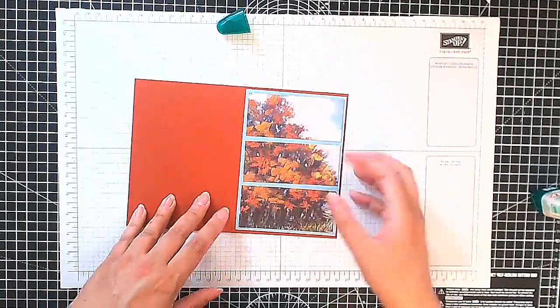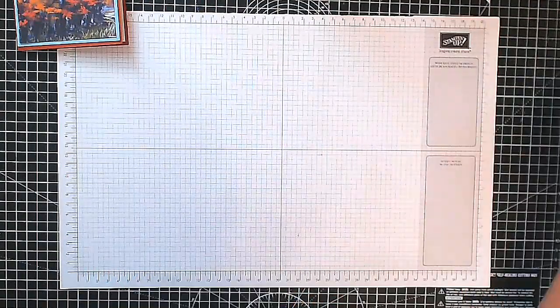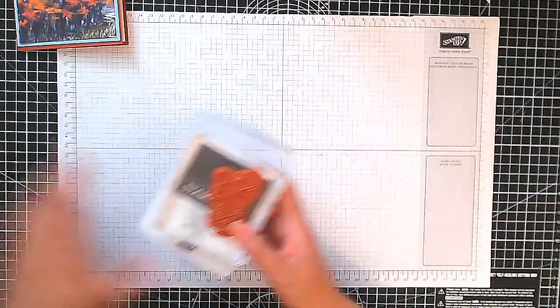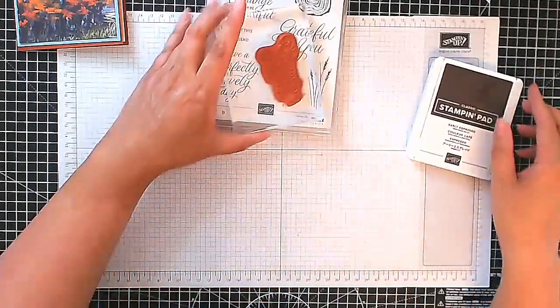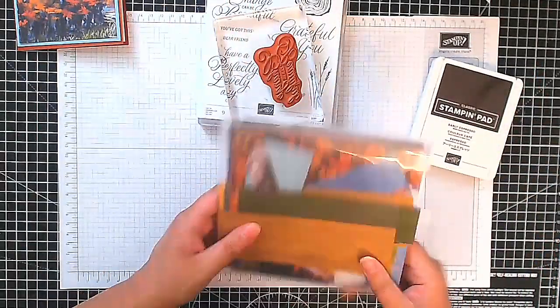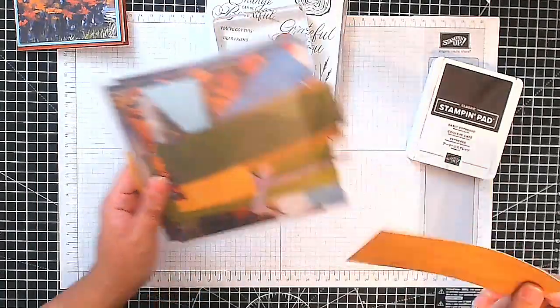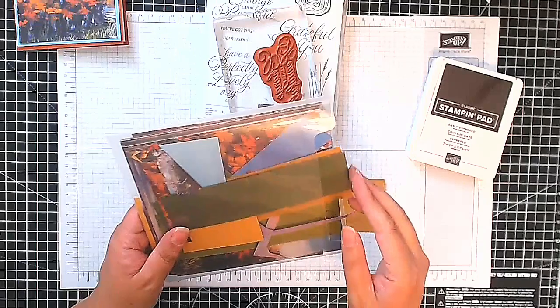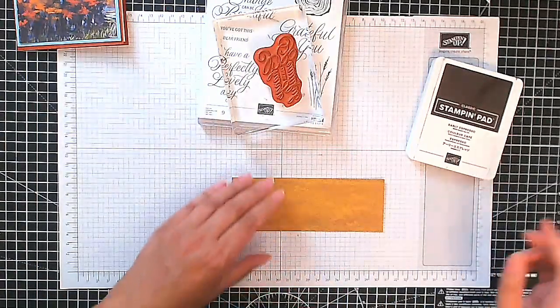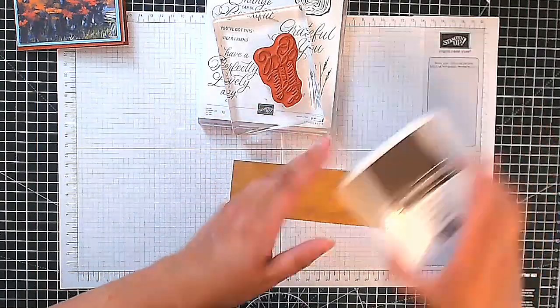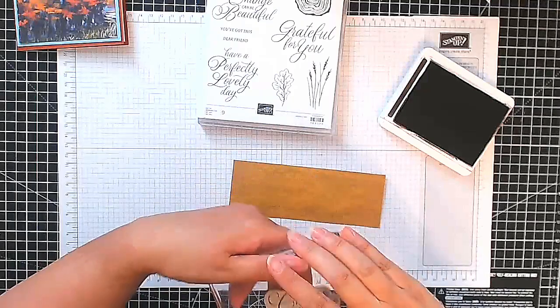Okay. Now we're going to do a little bit of stamping. So let's set that aside. Stamps that I'm going to use is called Autumn Expressions. I'm going to use Change Can Be Beautiful. Now I'm going to use again the Splendid Autumn designer series paper. I'm going to use a piece of my scrap here. So this is sort of crushed curry colour. So let's stamp. I'm going to stamp in Early Espresso.